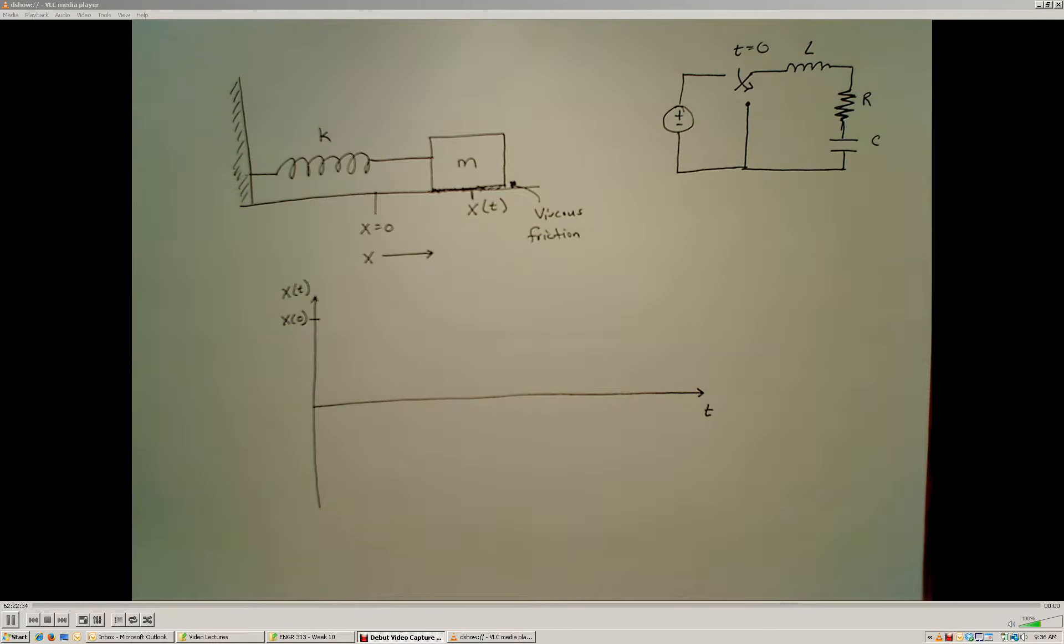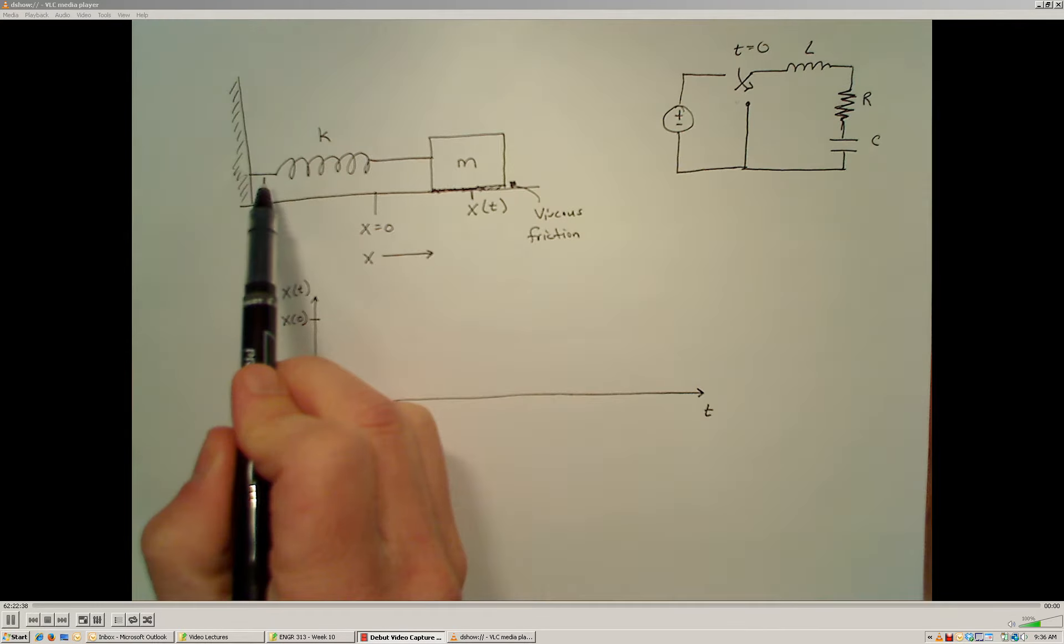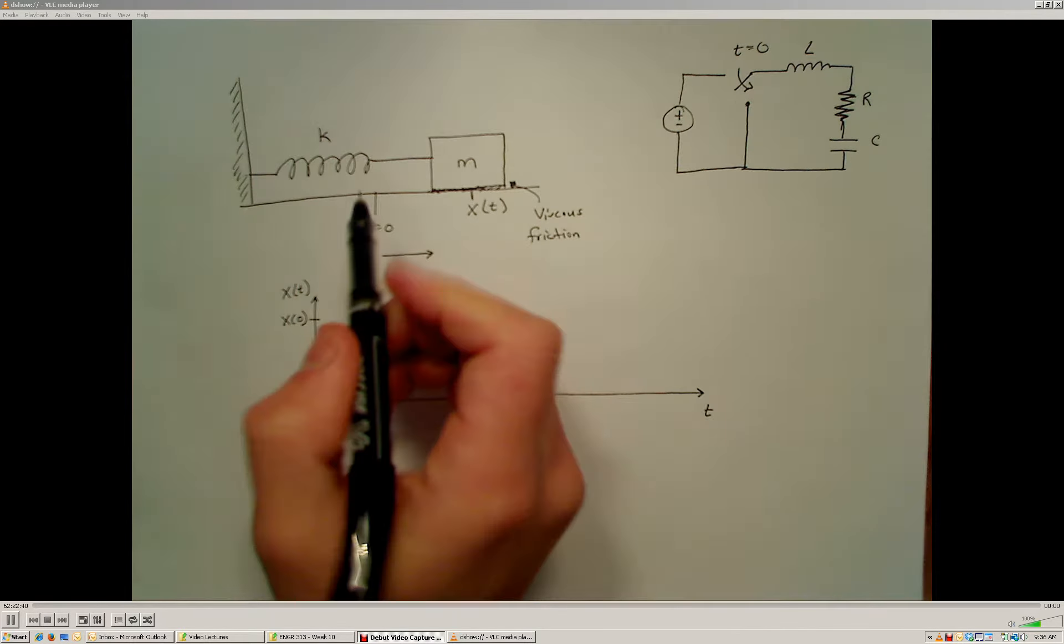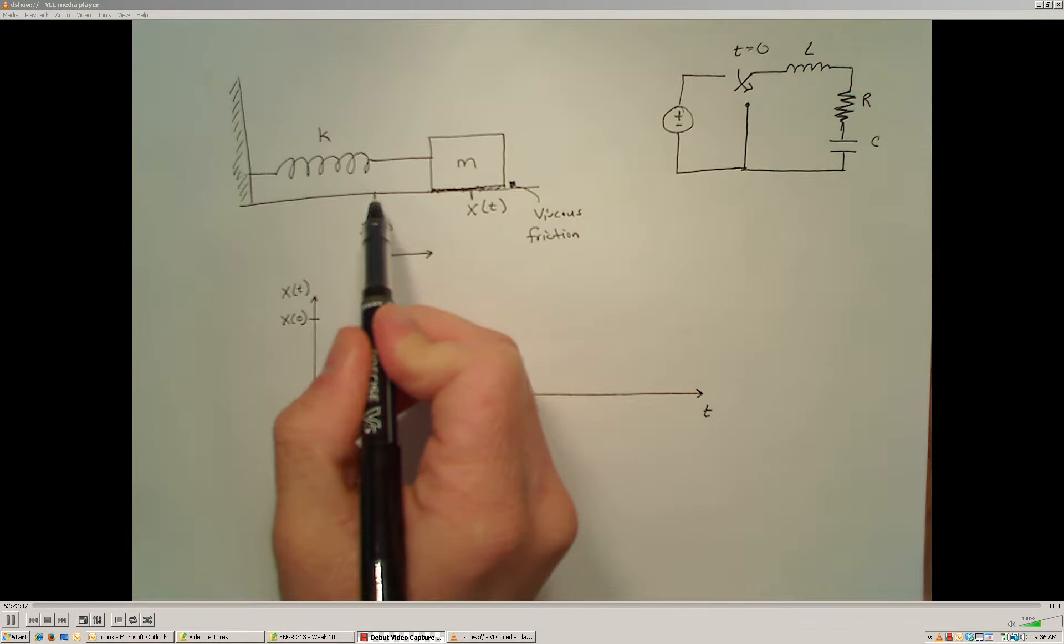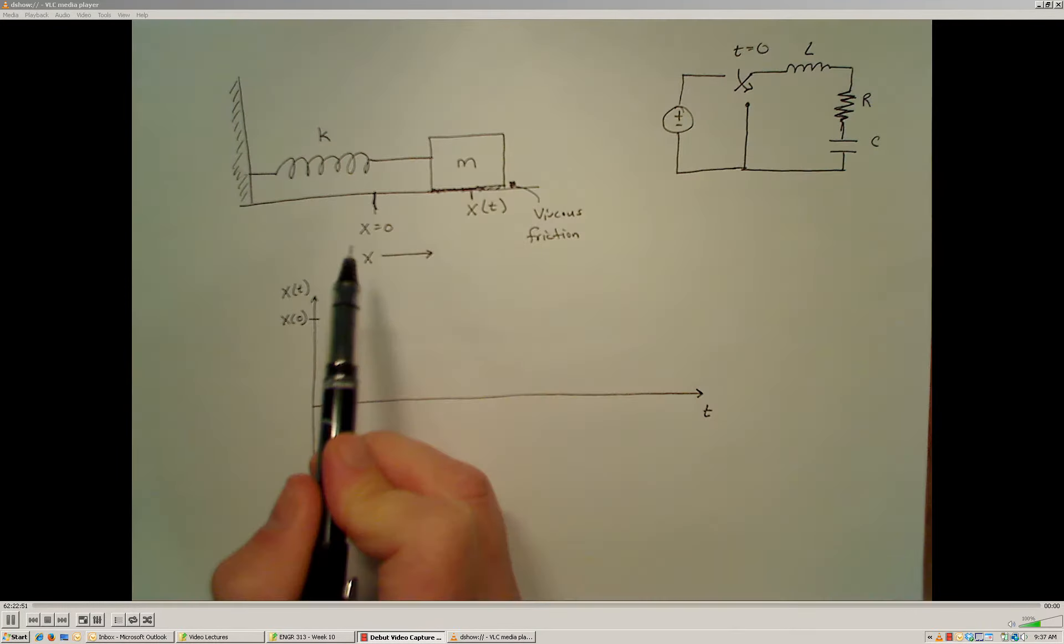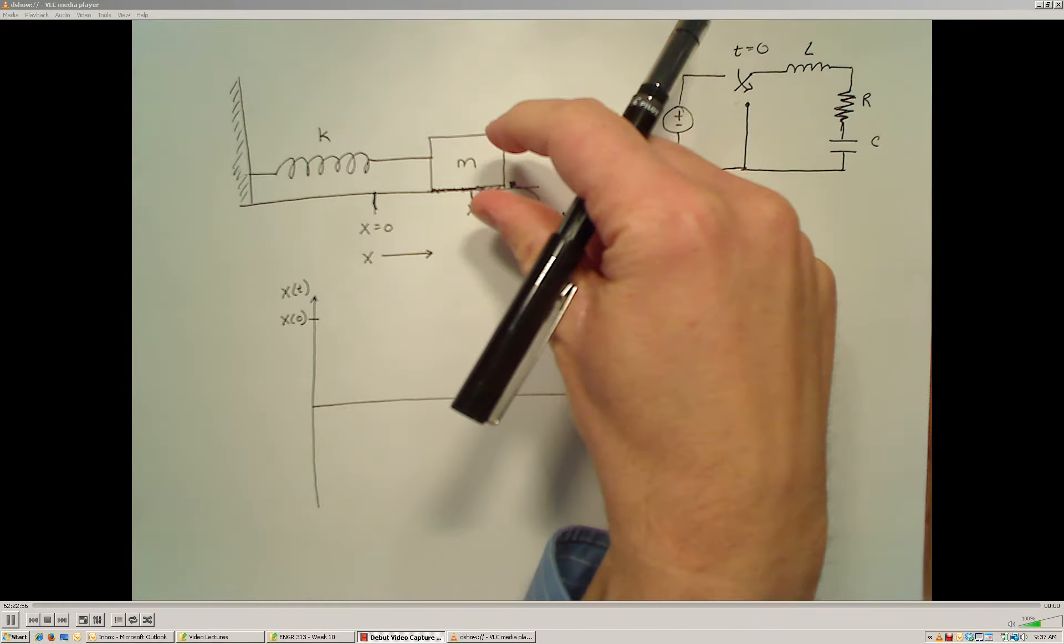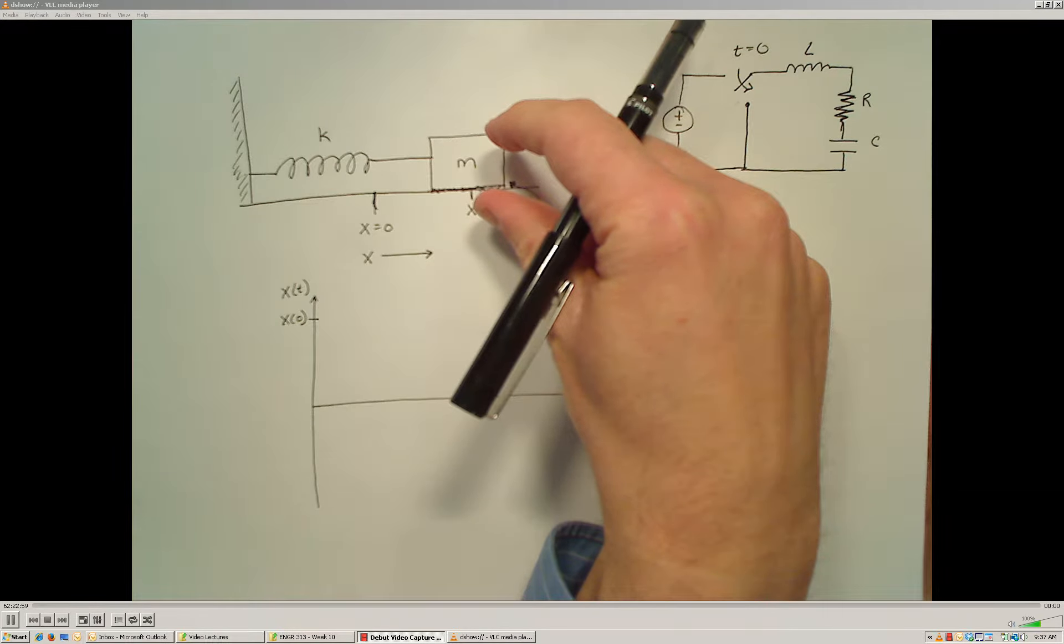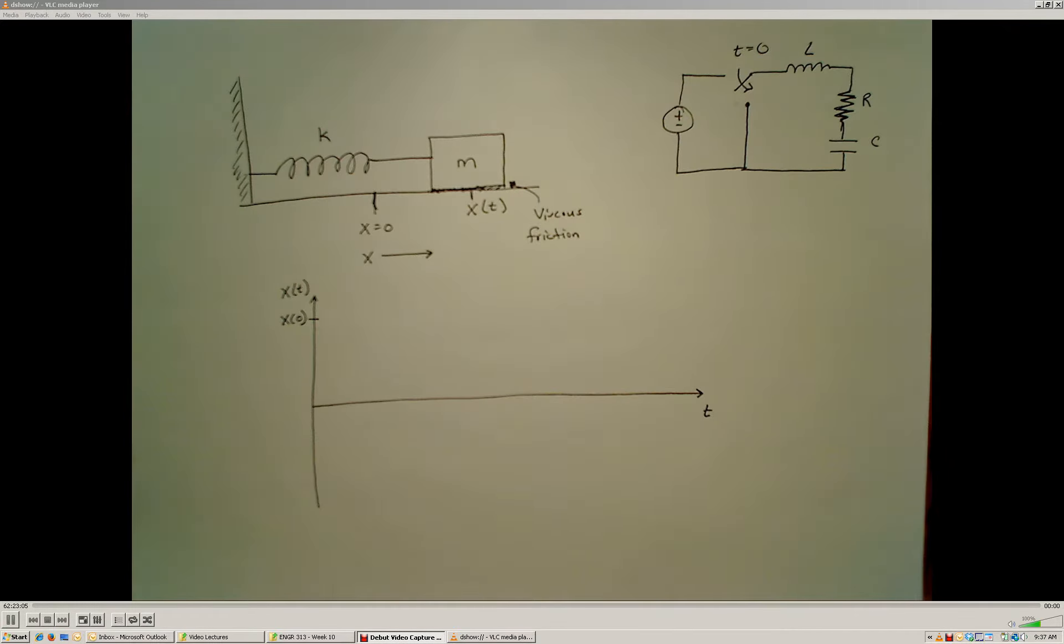So the question that we have here is: if this is a fixed wall and we have a spring connecting this mass, and the original rest position of the mass when the spring is not stretched or compressed lies right here at x equals 0, what's going to happen if I displace this mass, pull it out this direction some initial displacement, and at time equals 0, I let go of the mass? What's going to happen to the position of the mass?